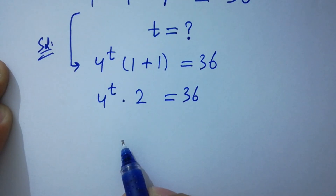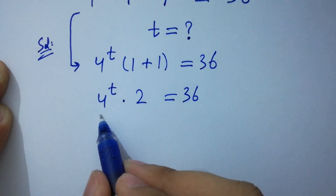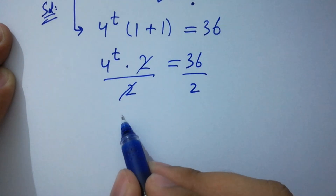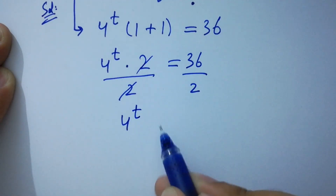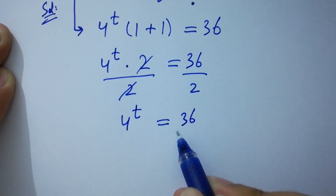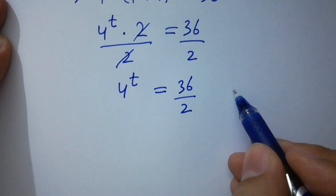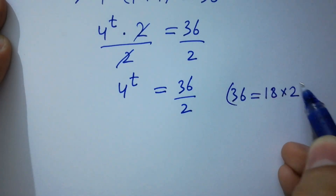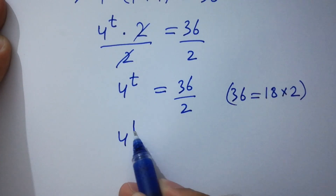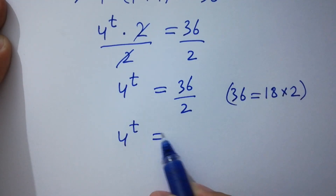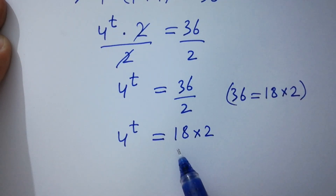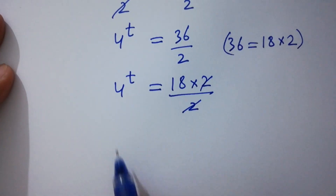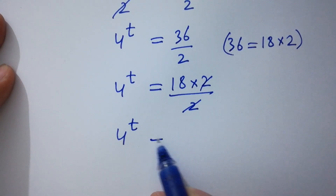To cancel this 2, divide by 2 on both sides. 2 and 2 cancel. We have 4 to the power t equal to 36 over 2. As we know, 36 equals 18 times 2, so it will be 4 to the power t equal to 18 times 2 over 2. Here 2 and 2 cancel, giving 4 to the power t equal to 18.